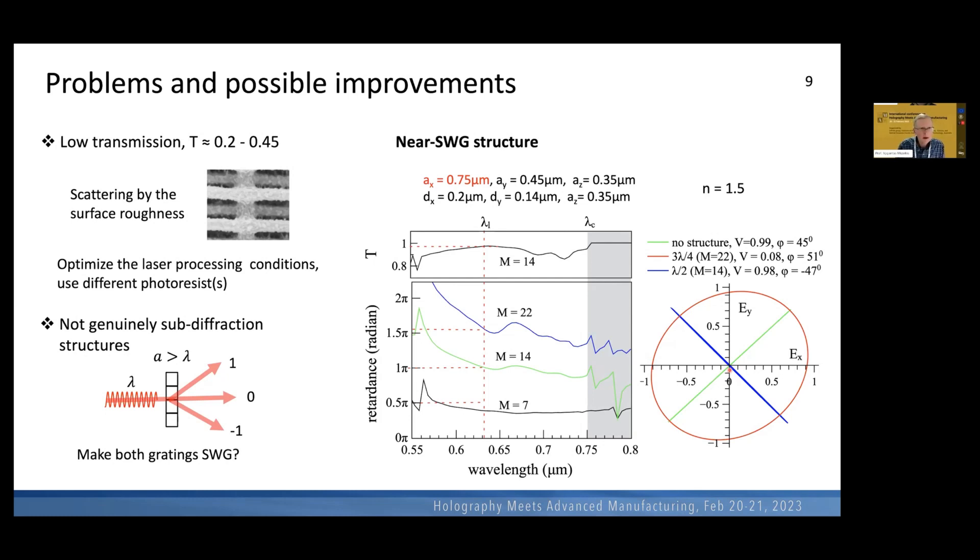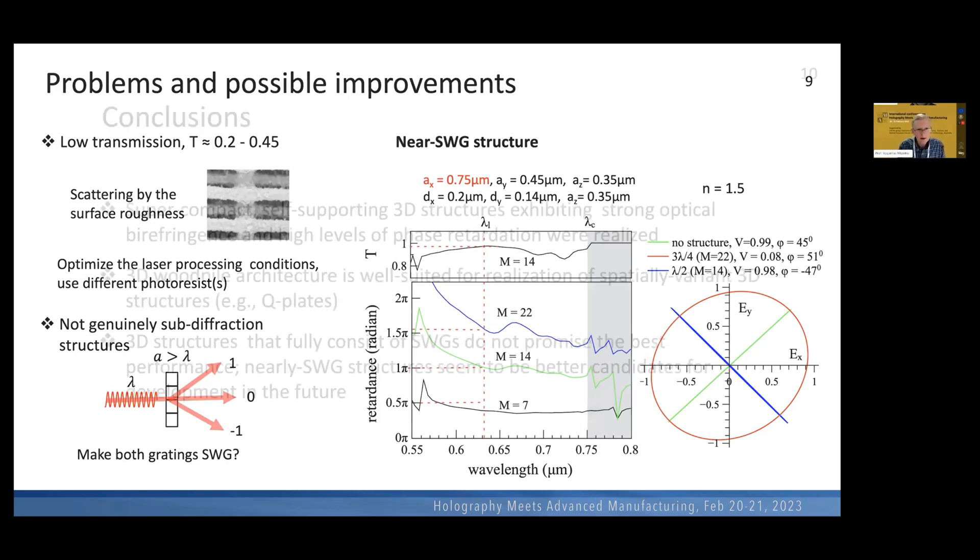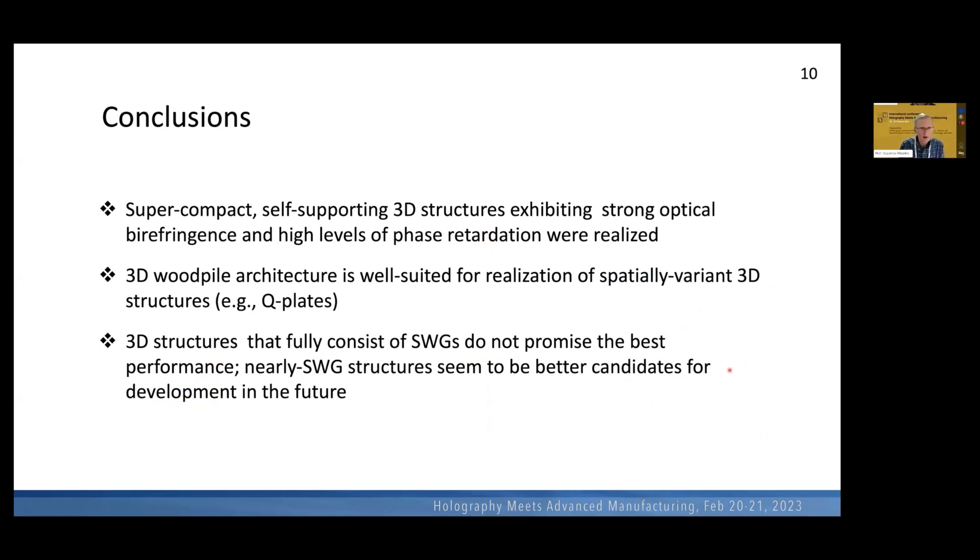And as a conclusion, I can say that we made some prototype of material which can be used to make supercompact and self-supporting birefringent structures, possibly leading to functional applications, and can be well-suited for use in spatially-variant structures such as the Q-plates that I showed before. And another interesting thing that I want to stress again, that in three-dimensional case, there is no meaning to go to fully sub-wavelength structures. We can have only, I think, nearly sub-wavelength structures perform better than fully sub-wavelength structures. So I think that is all for me, and I will be happy to answer any questions that you might have. Thank you.